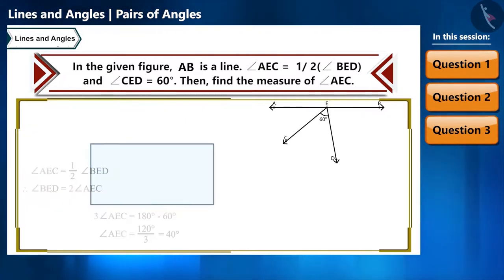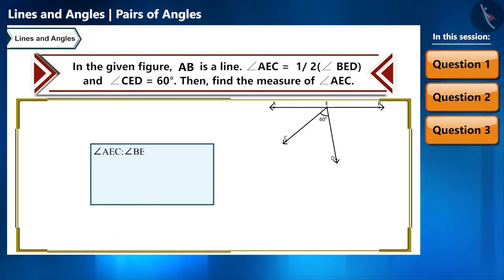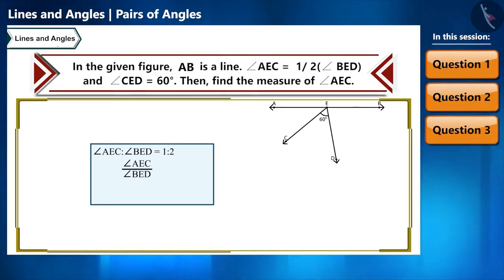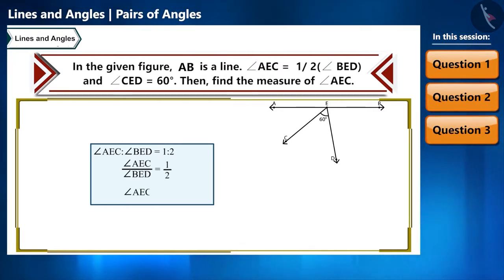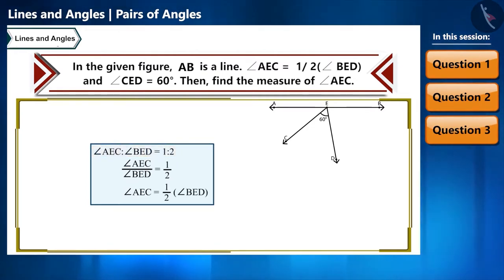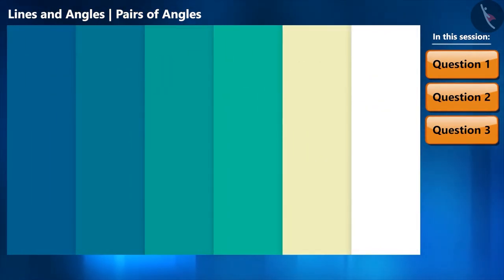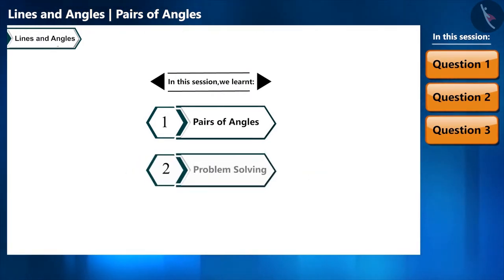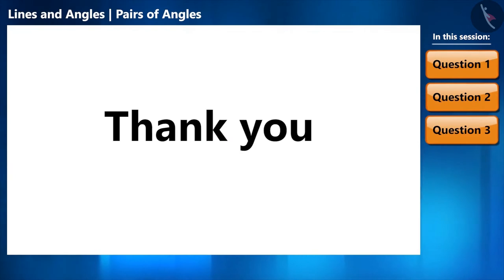This question can also be given as: angle AEC is to angle BED equals 1 is to 2, meaning angle AEC divided by angle BED equals one-half, which implies angle AEC equals one-half of angle BED. So the question can be given in different ways — we must not divert our attention from the properties. With this, let's end today's video. We solved some questions related to pairs of angles. Thank you.